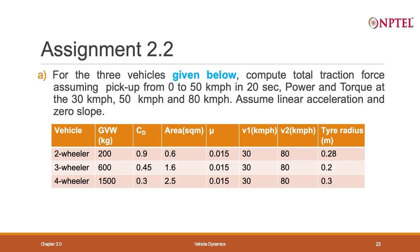So these are the three assignment problems I have defined. This is a slightly tedious assignment — you have to do the work for three vehicles: two-wheeler, three-wheeler, and four-wheeler, as defined in assignment 2.1. Compute total traction power assuming pickup speed from 0 to 50 km/h in 20 seconds, having already computed rolling resistance and aerodynamic resistance. Also compute power and torque at 30 km/h, 50 km/h, and 80 km/h.